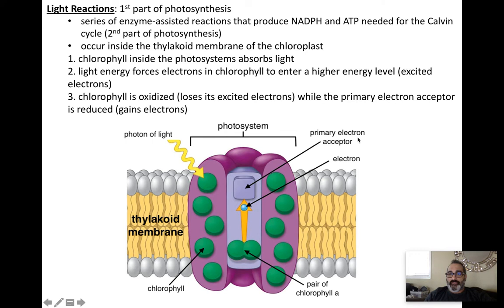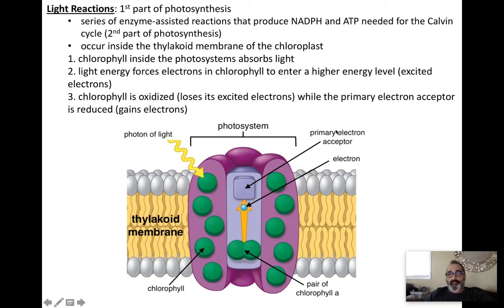So chlorophyll A loses electrons — it's oxidized. The primary electron acceptor gains electrons — it's reduced. There are two photosystems: photosystem 2 and photosystem 1. They look and work the same: both have chlorophyll, both have chlorophyll A, both absorb photons of light, and both have a primary electron acceptor. In both, chlorophyll A gets oxidized and the primary electron acceptor gets reduced. This all happens in the thylakoid membrane inside the chloroplast.